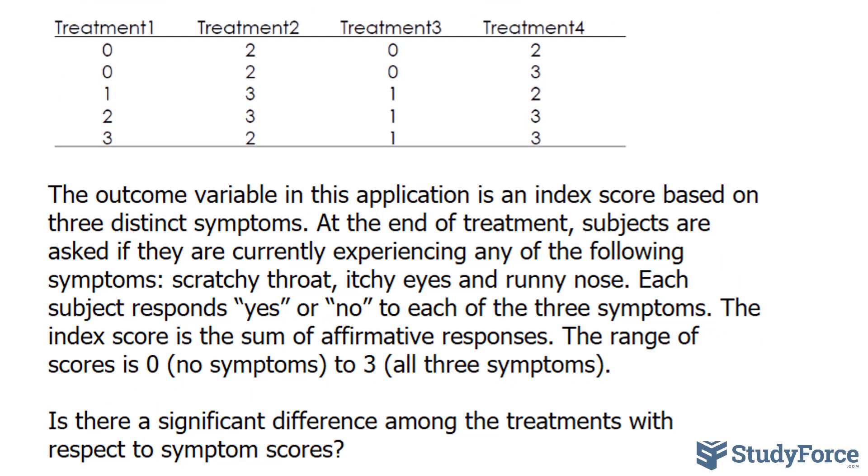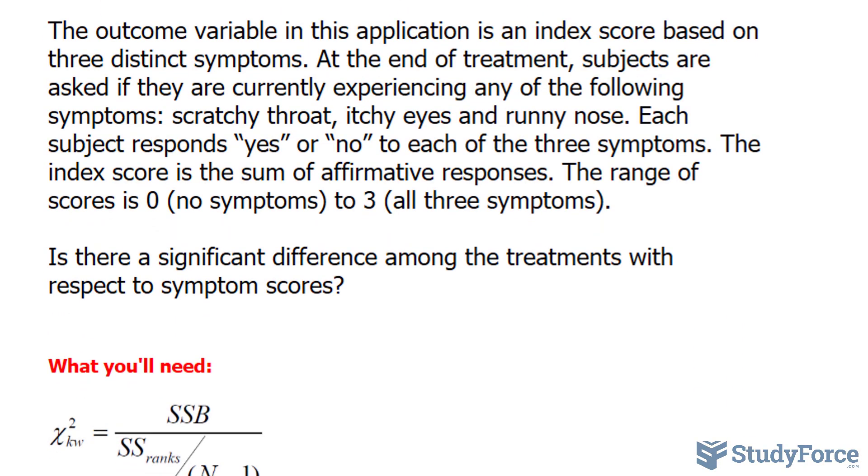Each subject responds yes or no to each of the three symptoms. The index score is the sum of affirmative responses. The range of scores is zero for no symptoms, and three for all three symptoms. Is there a significant difference among the treatments with respect to symptom scores?